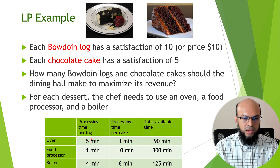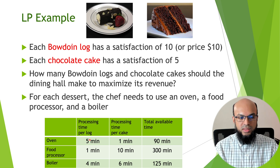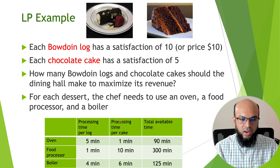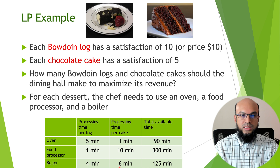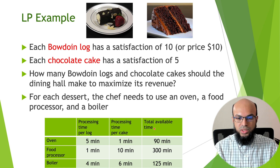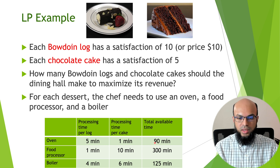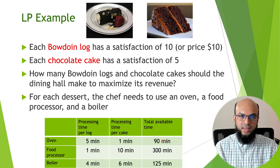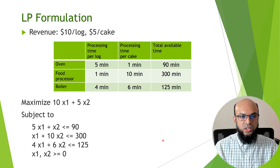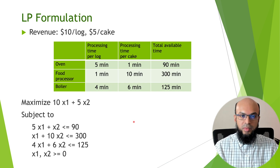For each dessert, the chef needs to use an oven, a food processor, and a boiler, which imposes constraints on how many logs and cakes can be made. These constraints are represented in a table. The processing time for each log is five minutes of oven time, one minute of food processor time, and four minutes of boiler time. The last column shows the total available time for each machine — for example, the oven is only available for up to 90 minutes.